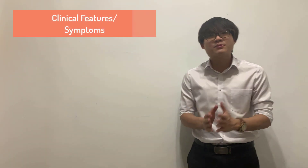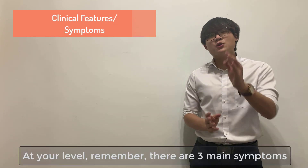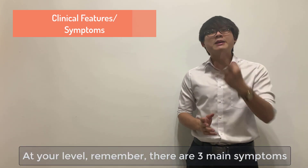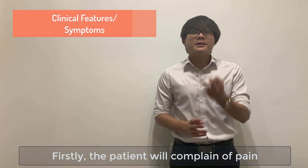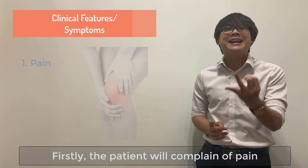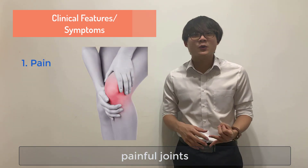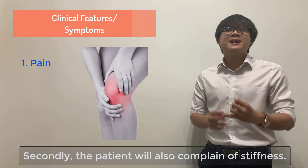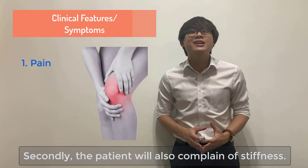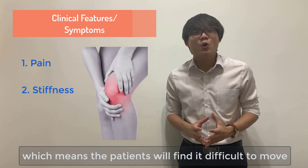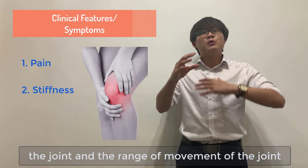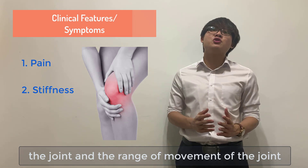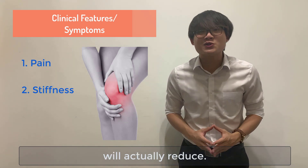Now we'll be talking about the clinical features or the symptoms of osteoarthritis. At your level, remember, there are three main symptoms. Firstly, the patient will complain of pain — painful joints. And secondly, the patient will also complain of stiffness, which means the patient will find it difficult to move the joint and the range of movement of the joint will actually reduce.